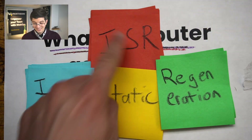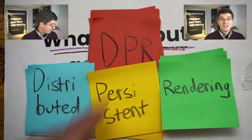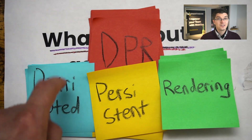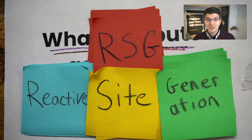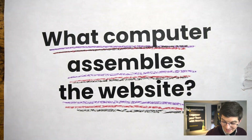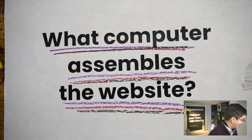There's ISR, Incremental Static Regeneration. There's DPR, Distributed Persistent Rendering. And now RSG, Reactive Site Generation. It's too much! Does every web team need to understand every single one of these? I prefer to start with a simpler question: what computer assembles the website?